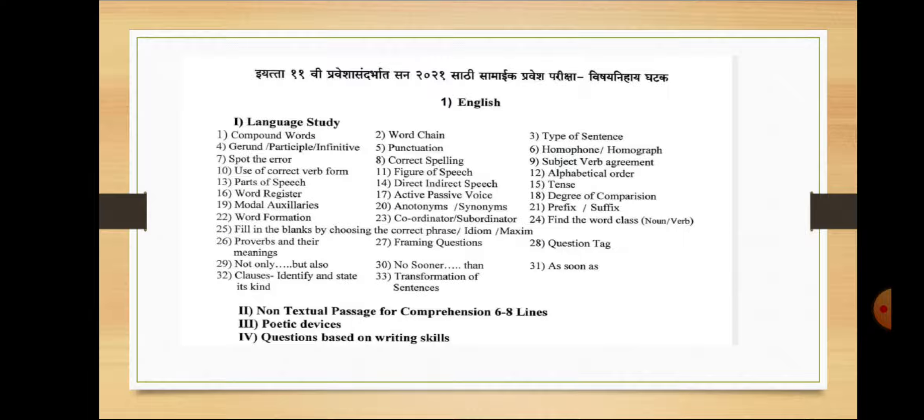Vidyarthi Mitro, let me tell you that this CET exam syllabus is mainly divided into 4 sections: language study, non-textual passage for comprehension 6-8 lines, third poetic devices, and fourth questions based on writing skills. Now in language study there are 33 sections, and questions from these sections are asked. Today we will discuss two main sections: language study and non-textual passage for comprehension 6-8 lines.